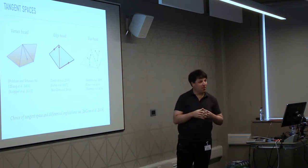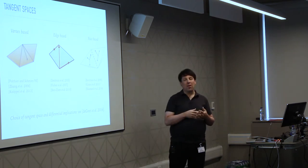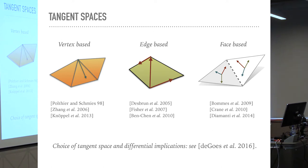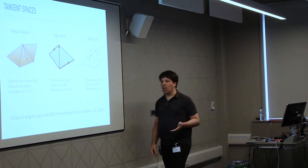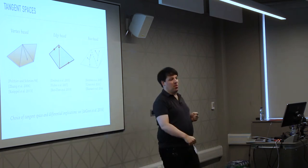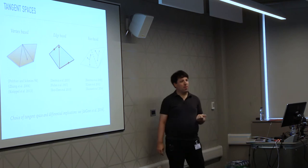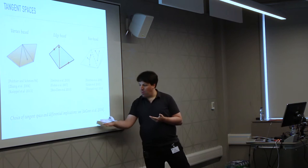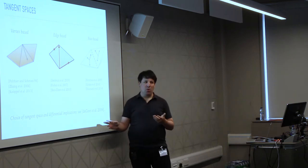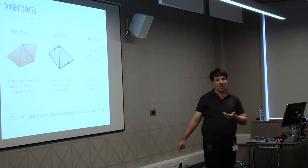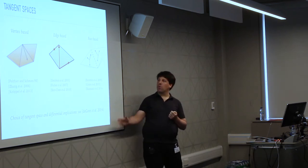One of the biggest problems in discretization is choosing where the vector lives: on the vertices, the edges, or the faces. One popular option is discrete exterior calculus, where you integrate vectors along edges and give a single number as the representation. Another is face-based, where faces are natural tangent planes and you paint vectors onto those tangent planes. I'm not going to talk much about these two because they have differential geometry implications not related to what I'm trying to convey today.